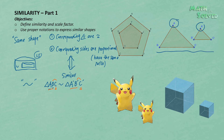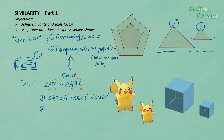Based on these two points, the corresponding angles are congruent in these two triangles. Angle A is congruent to angle A prime, angle B is congruent to angle B prime, and angle C is congruent to angle C prime. And from the second condition, the corresponding sides are proportional — they have the same ratio.